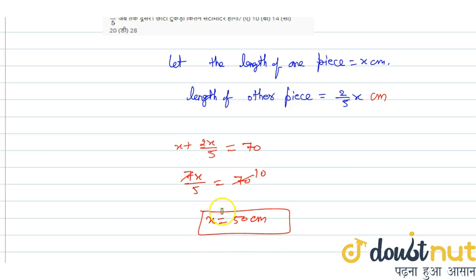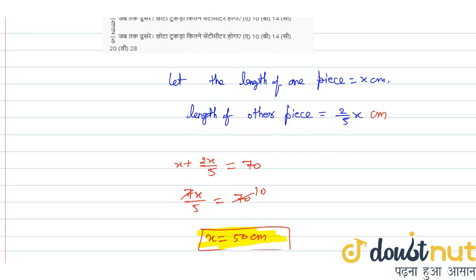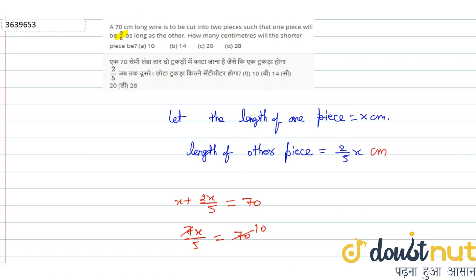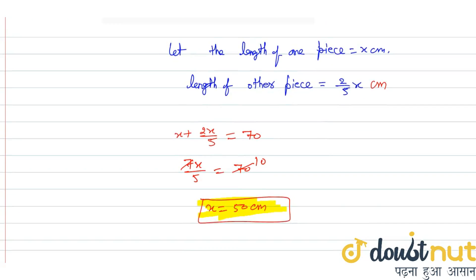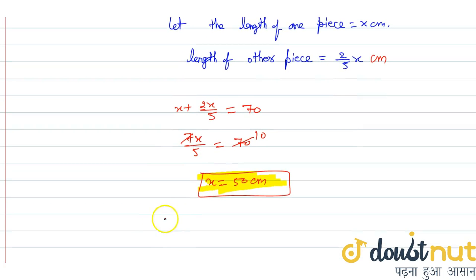So x is the length of one piece. One piece length is x equals 50 centimeter. Length of other piece equals 2/5 into x. The x value is 50, so 2/5 times 50 equals 20 centimeter. The other piece length is 20 centimeter.